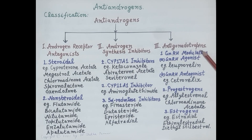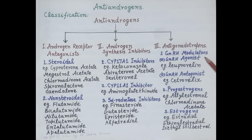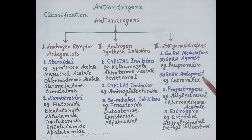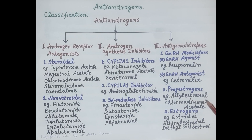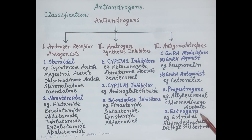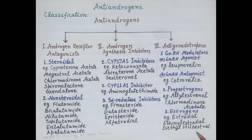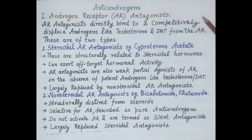The third category of anti-androgens is anti-gonadotrophins, which reduce androgen levels in the blood. These are of three types: gonadotropin releasing hormone modulators, progestogens, and estrogens. GnRH modulators include GnRH agonists such as leuprorelin and GnRH antagonists such as cetrorelix. Progestogens include allyl estrenol and chlormadinone acetate, and estrogens include estradiol, ethinyl estradiol, and diethylstilbestrol.